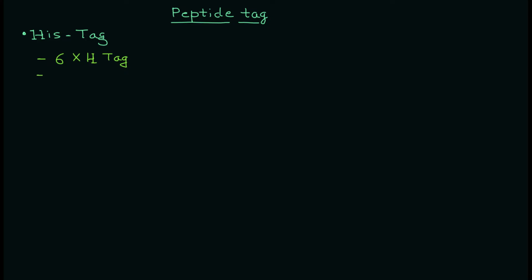To purify a protein, you can use the histidine tag. Basically, six to twelve histidines can be incorporated into your protein, either at the C-terminal or the N-terminal, to purify your protein of interest. This is the most commonly used tag in protein purification.